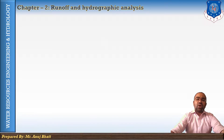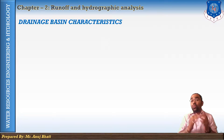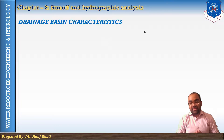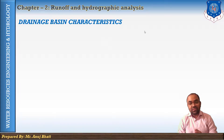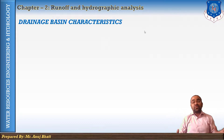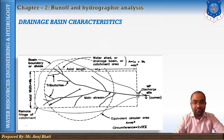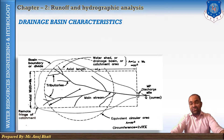Now we will discuss drainage basin characteristics. First, what is a drainage basin? The entire area of a river basin whose surface runoff due to storms drains into a river or river basin is considered as the hydrologic unit, known as the drainage basin. This drainage basin is also considered as the watershed or catchment area of the river. This is the schematic diagram of a watershed or drainage basin.